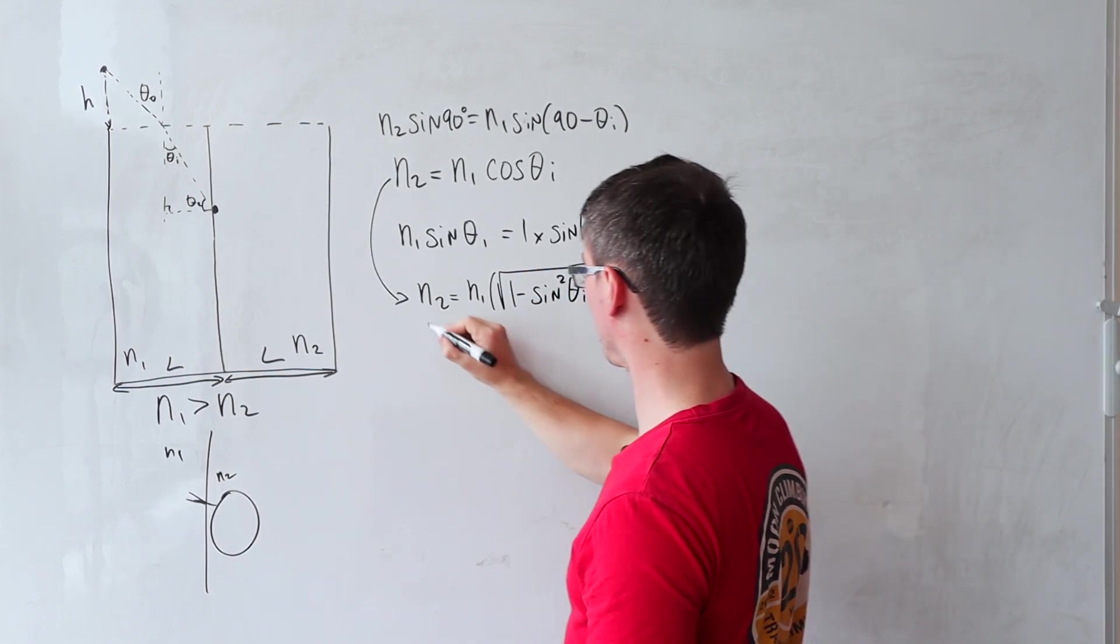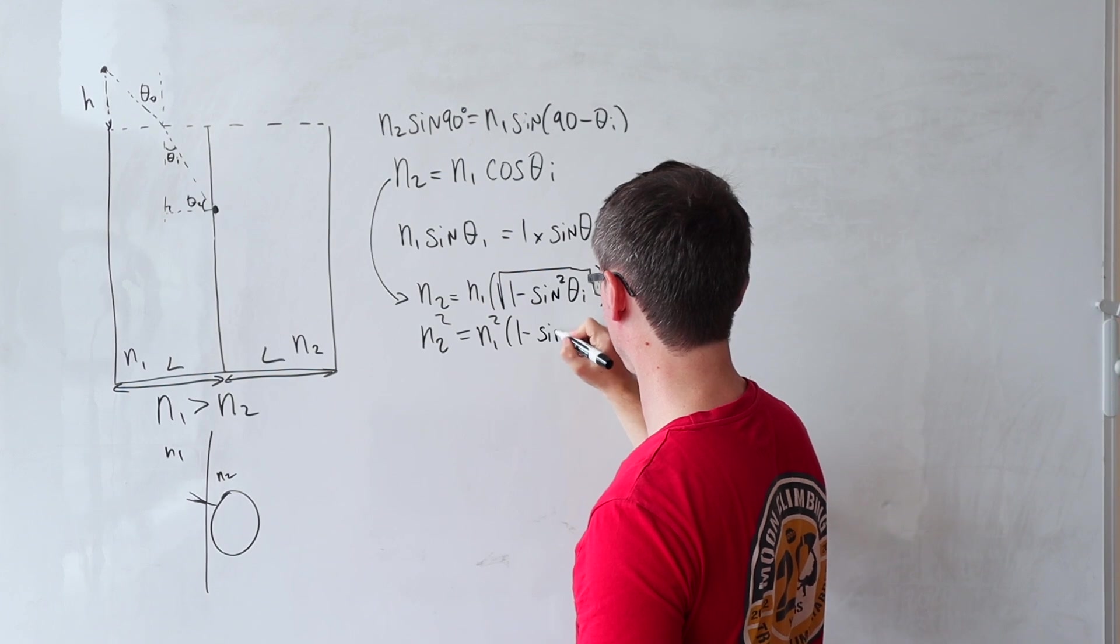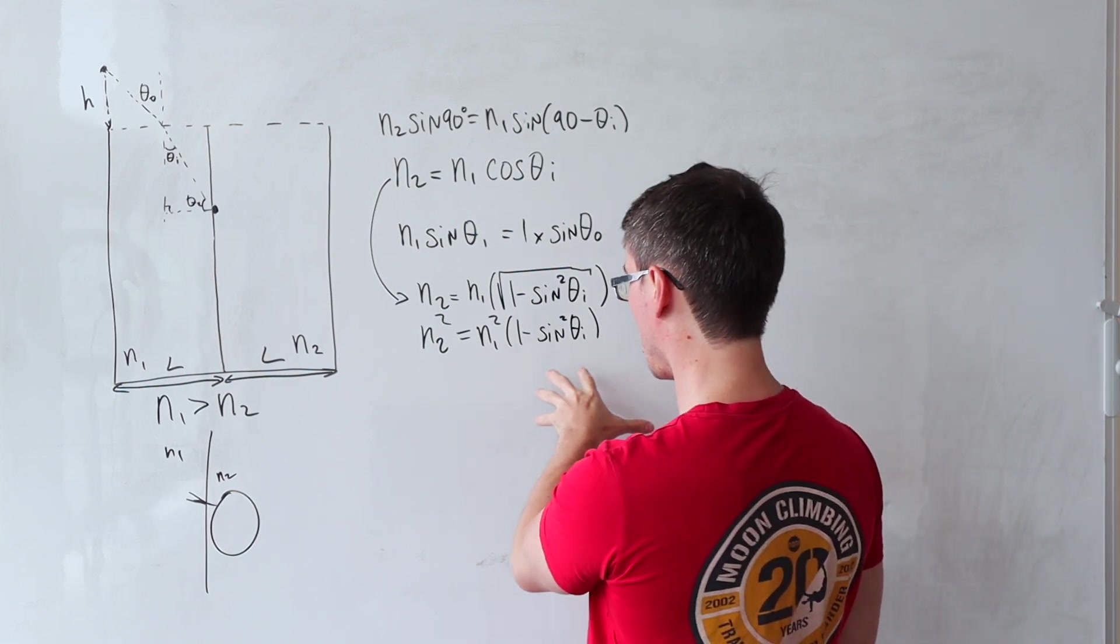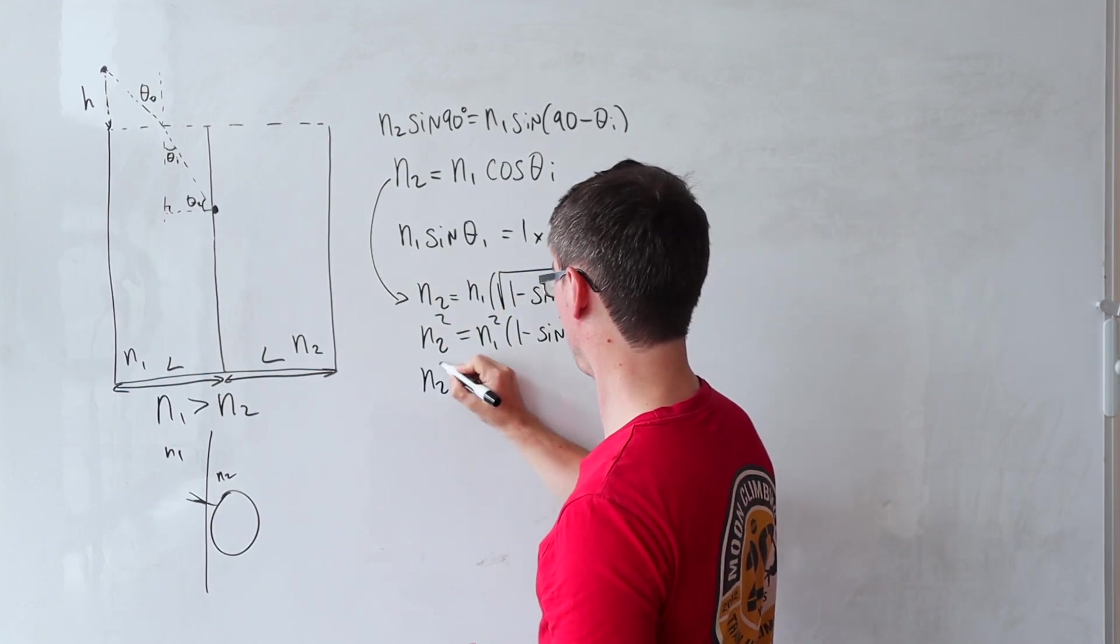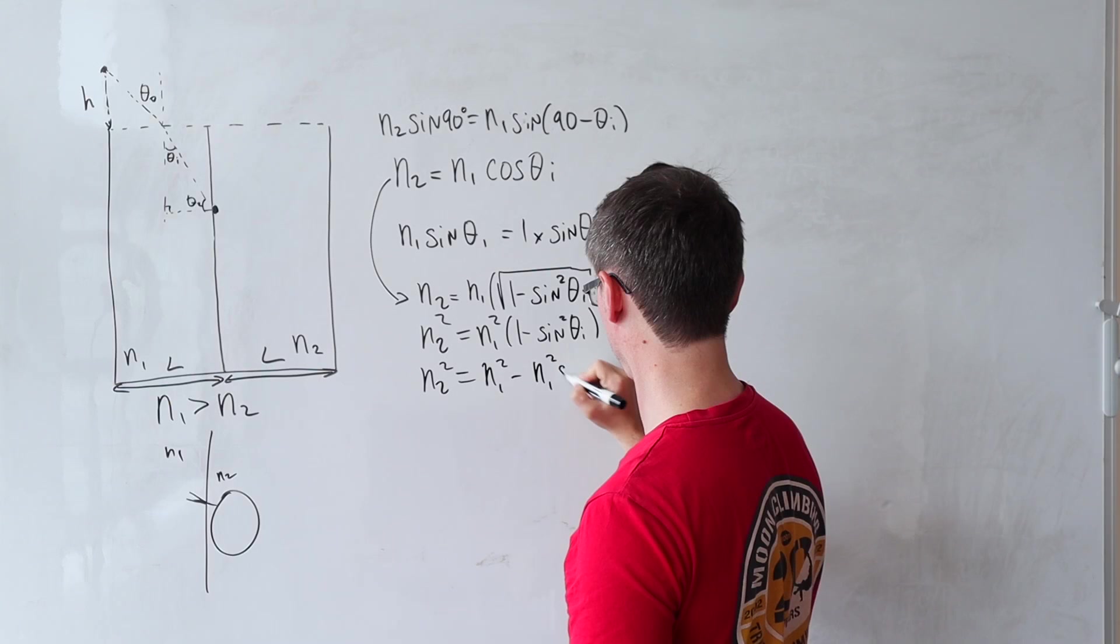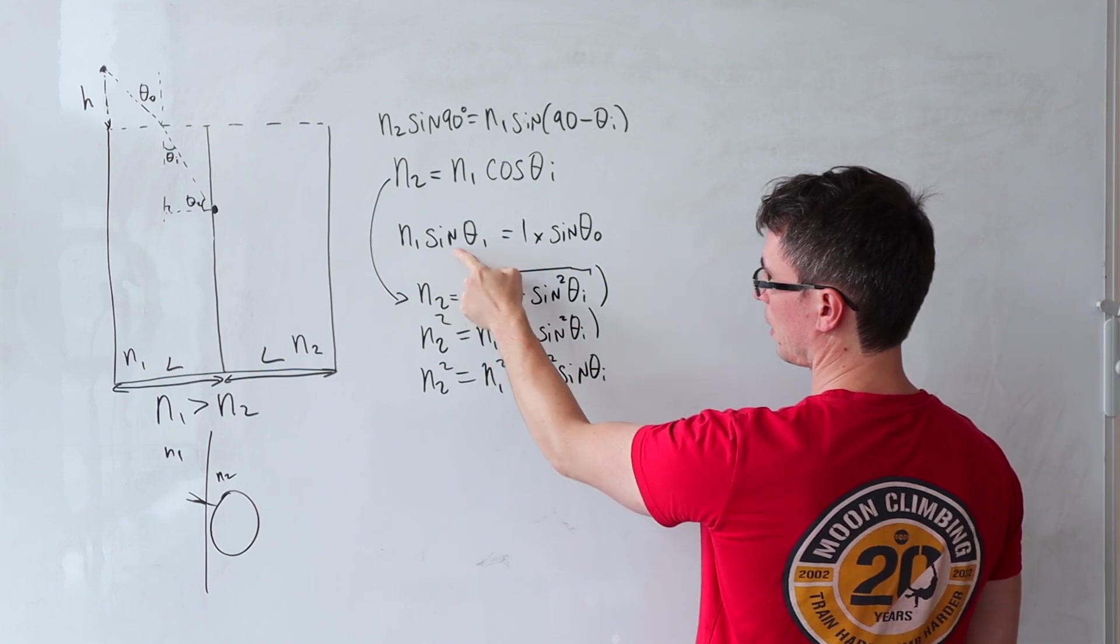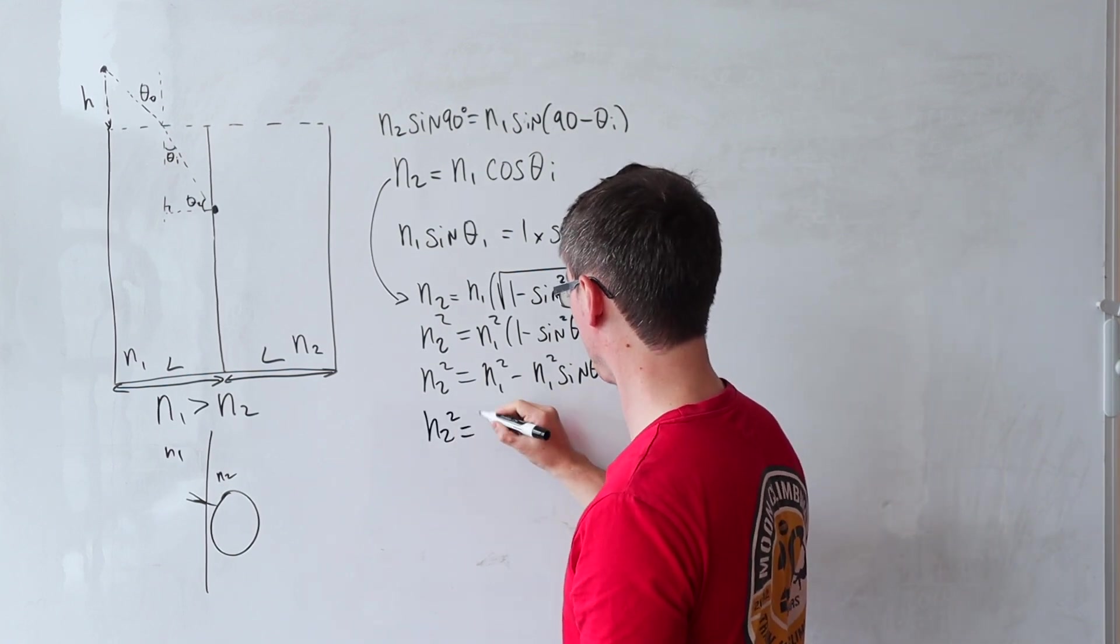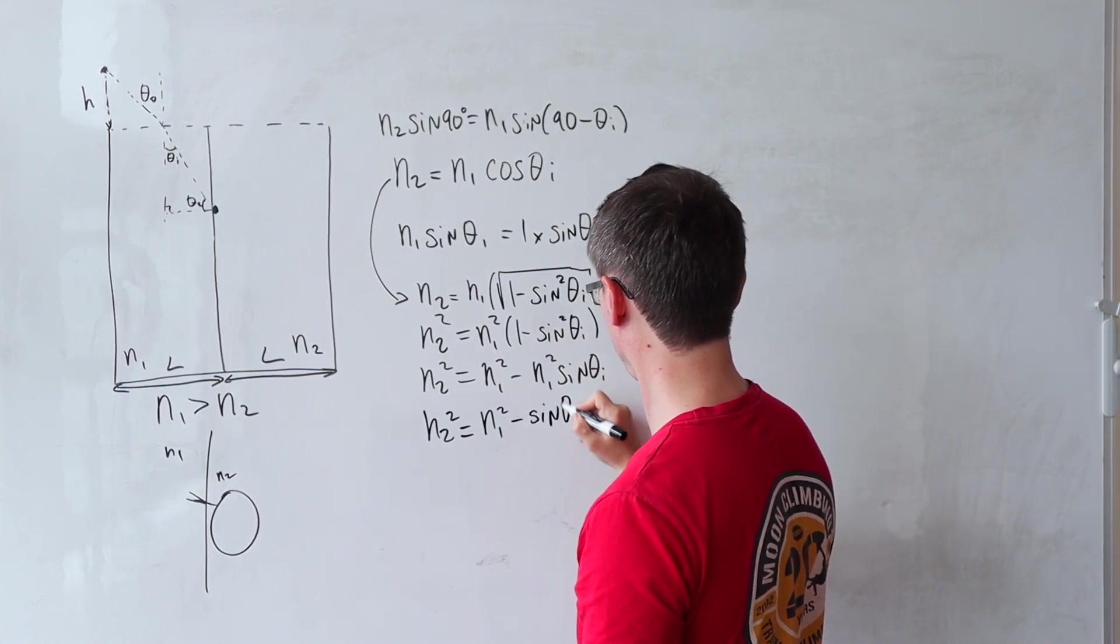I tell you what, let's even get rid of the square root sine. So I'm going to go N2 squared is equal to N1 squared. What we're left with is one minus sine squared theta i. We can probably tidy this expression up. So this here will be equal to L squared, and then 1 over N1 squared take away N2 squared. Let's just expand the brackets minus N1. I'm about to do a mistake. Can you spot it? N2 squared sine theta i.